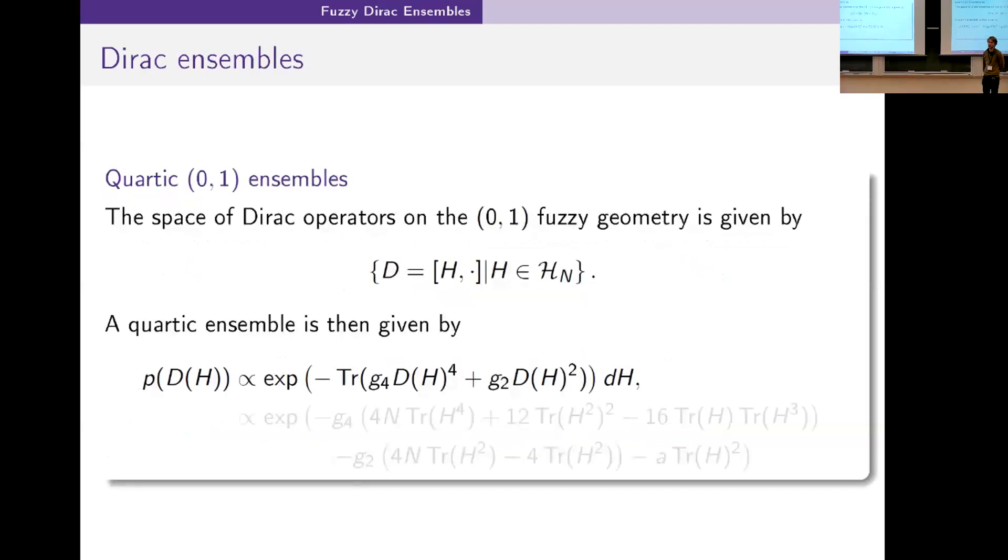For our first investigations to (0,1) fuzzy geometries where there is only one matrix involving your Dirac operator. It's always the commutator of some self-adjoint matrix.